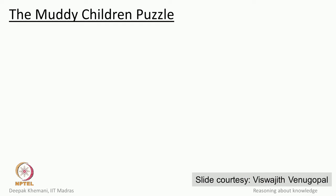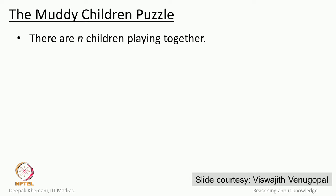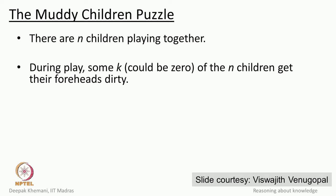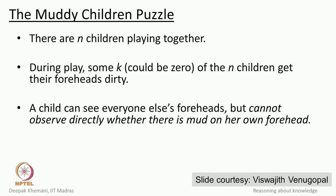We will do this with the very famous muddy children puzzle. The problem is like this: there are n children playing together and they have been warned by their parents not to get dirty. During play, some k children — it could be 0 or it could be n — do get their foreheads dirty. A child can see if somebody else's forehead is dirty, but she cannot see whether her own forehead is dirty, similar to the cap problem discussed earlier.